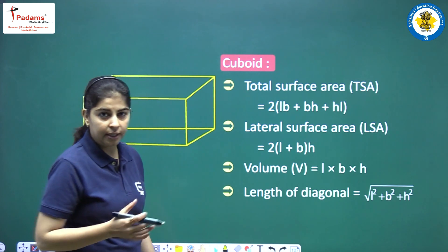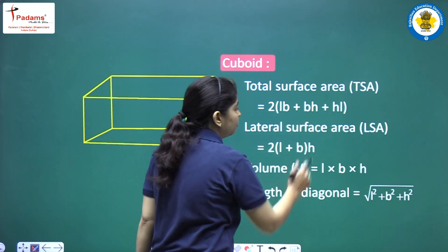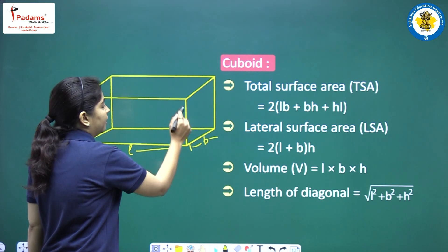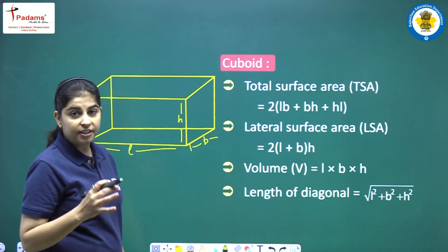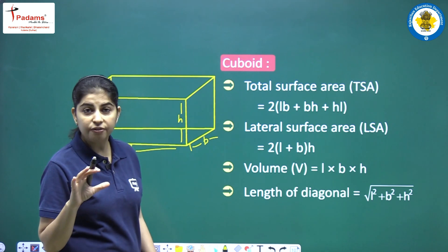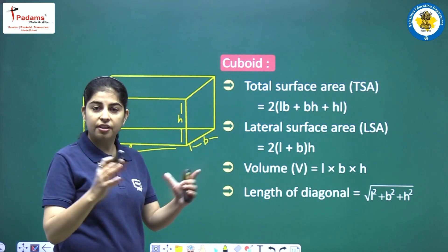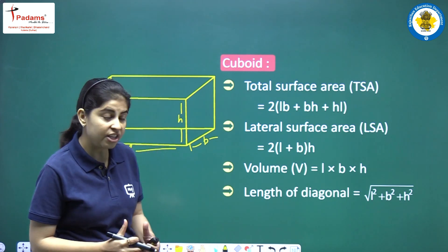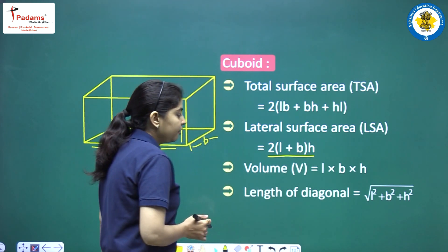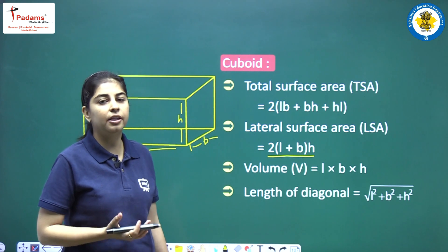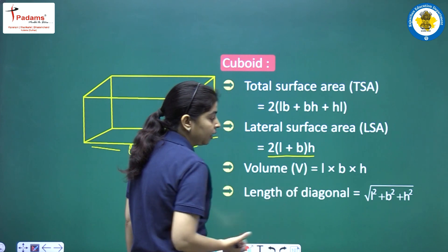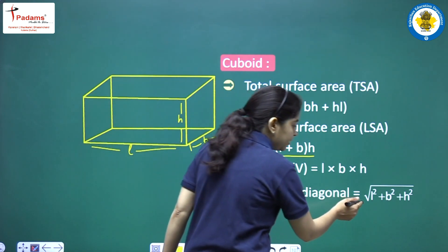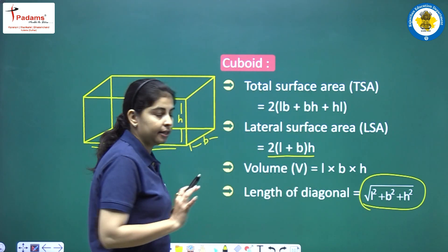Cuboid: the total surface area is 2(LB + BH + HL), where L is length, B is breadth, and H is height. The lateral surface area — area of 4 walls — is 2H(L + B). Volume of cuboid is length × breadth × height, i.e., L × B × H. The length of the diagonal — often asked in objective type questions — is √(L² + B² + H²).